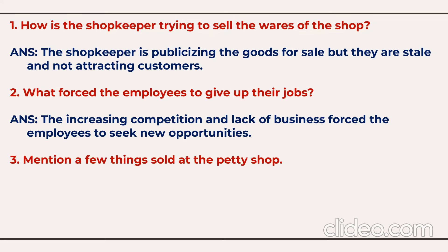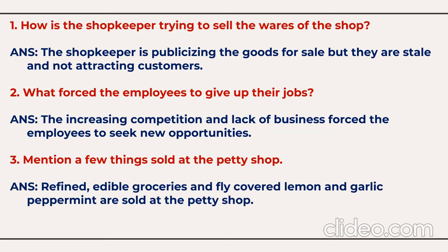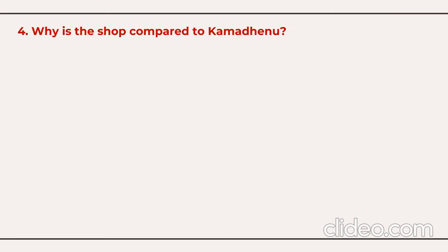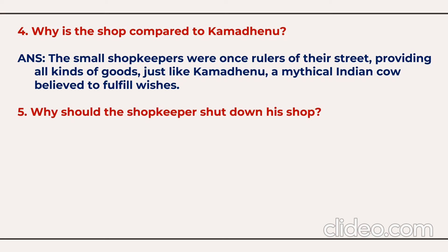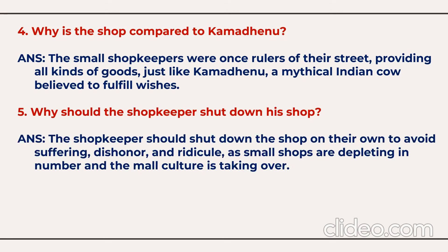Question three: Mention a few things sold at the petty shop. Refined edible groceries, fly-covered lemon, garlic, and peppermint are sold at the petty shop. Question four: Why is the shop compared to Kamdenu? Because the small shopkeepers were like rulers in the street; they provided all kinds of goods just like Kamdenu, the mythical Indian cow which could fulfill any kind of wish. Question five: Why should the shopkeeper shut down his shop? The shopkeeper should shut down on their own to avoid suffering dishonor and ridicule, as small shops are depleting in number due to mall culture taking over.